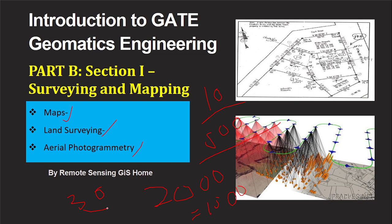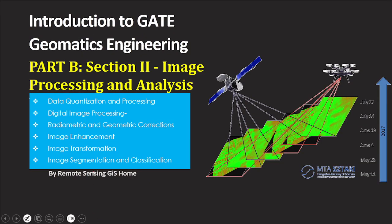For the DIP (Digital Image Processing and Analysis) course, topics include data quantization and processing, digital image processing, radiometric correction, image enhancement, image transformation, image segmentation, and classification — also 2000 rupees, with 500 rupee discount for first 10 students. This section covers all 30 marks. All course description links are provided in the description box below — you can also download the app from the Play Store.